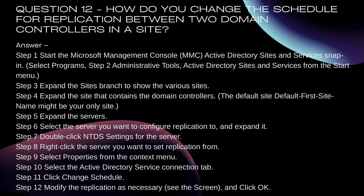Step 3: Expand the Sites branch to show the various sites. Step 4: Expand the site that contains the domain controllers — the default site 'Default-First-Site-Name' might be your only site. Step 5: Expand the Servers. Step 6: Select the server you want to configure replication to and expand it. Step 7: Double-click NTDS Settings for the server. Step 8: Right-click the server you want to set replication from.